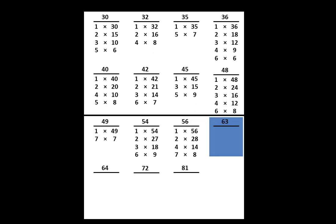Let's move to the number 63. On your paper, write that we can think of 63 as 1 times 63 or 3 times 21 or 7 times 9. Those are all the factor pairs of 63.